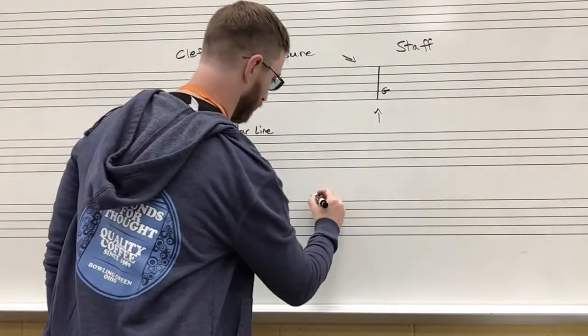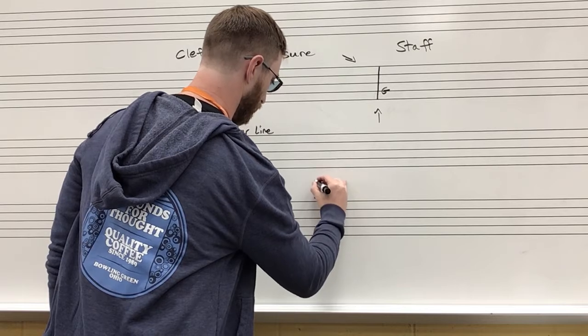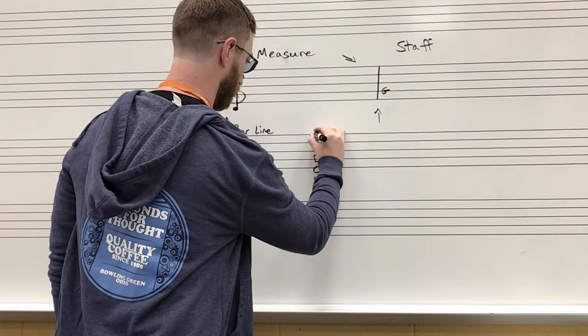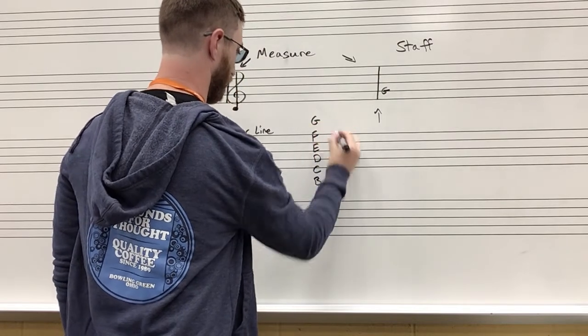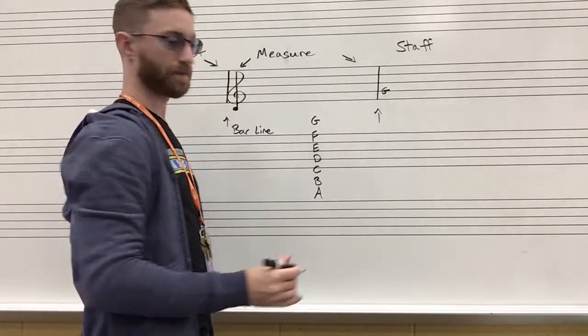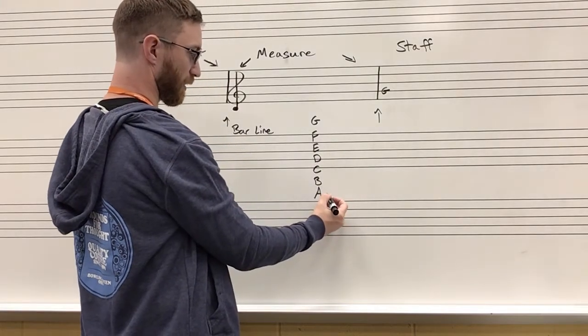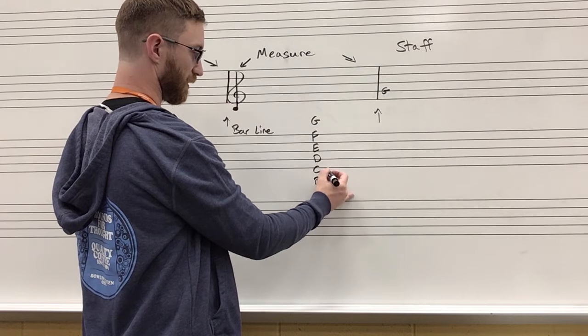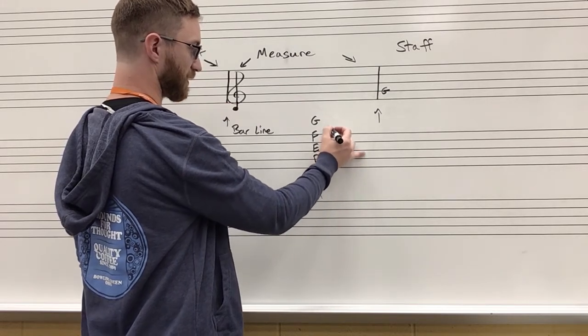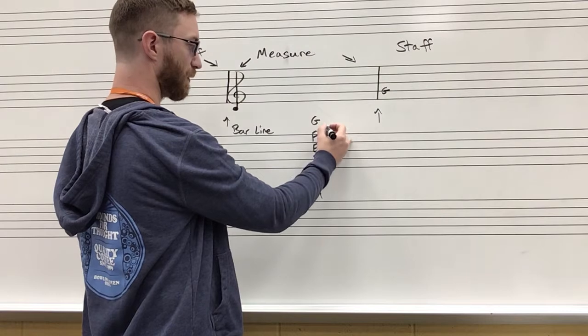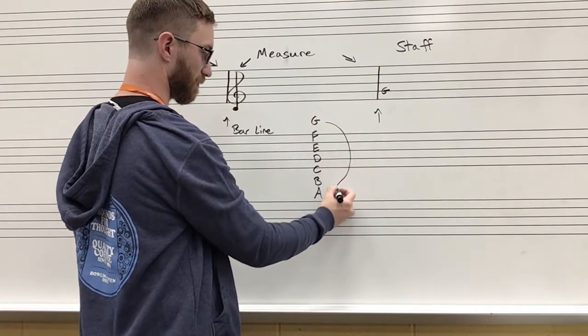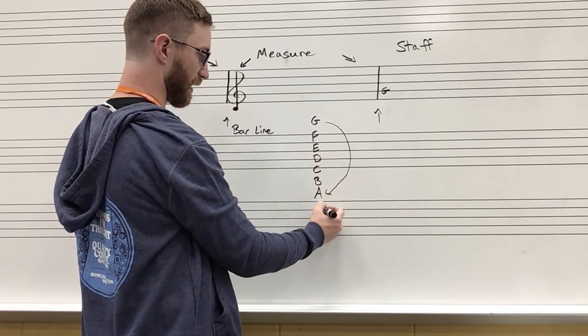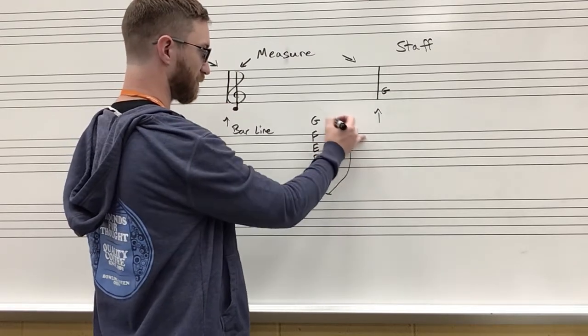The music alphabet goes from A all the way to G and then it restarts. So if I have a note where I go A and then I go up I go to B, C, up to D, then E, up to F, up to G, and then if I keep going up I simply restart at A. If I'm going down, C, B, A, and I have to keep going, I simply restart at G.